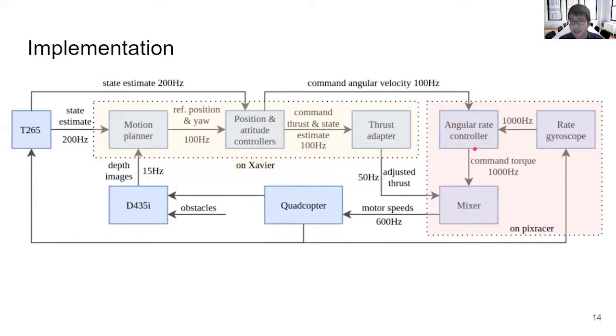On the Pixracer, the angular velocity controller and the mixer are run, and the Pixracer sends motor speed commands to the electronic speed controllers at a frequency of 600 hertz.